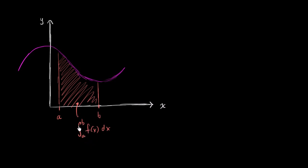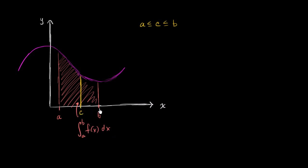What I want to do in this video is introduce a third value, c, that is in between a and b — and it could be equal to a or it could be equal to b. I can write that a is less than or equal to c, which is less than or equal to b. What I want to think about is how this definite integral relates to the definite integral from a to c and the definite integral from c to b.